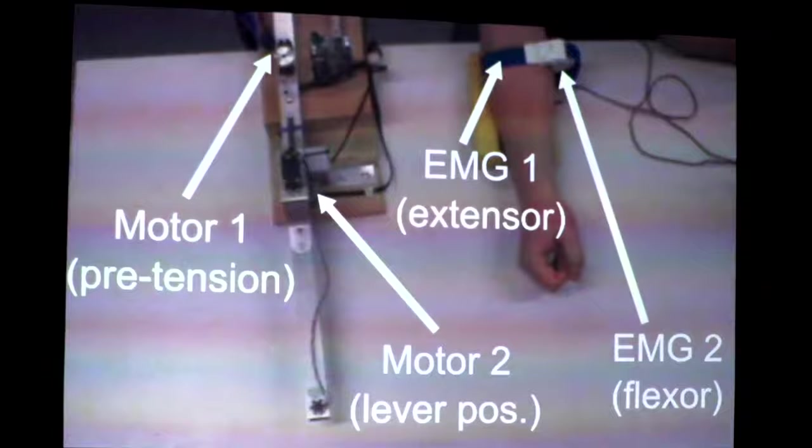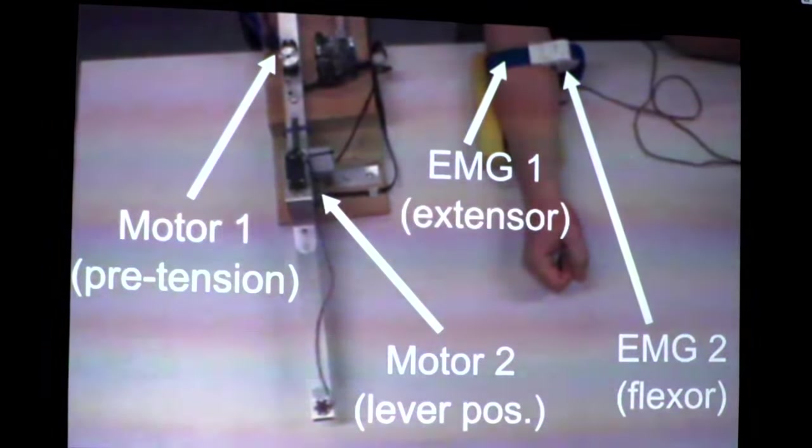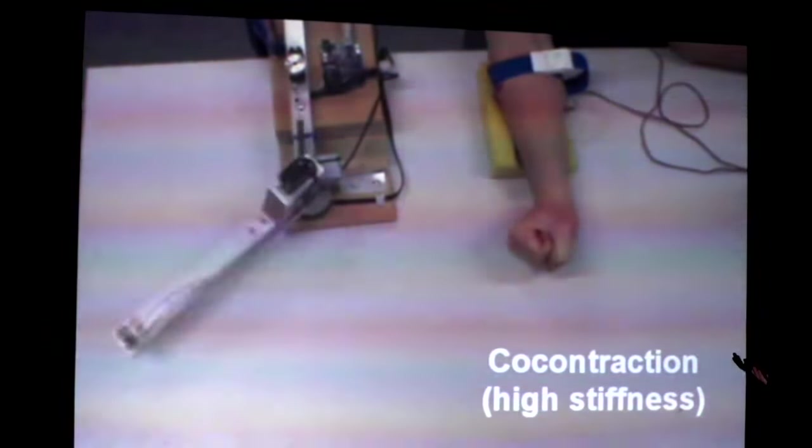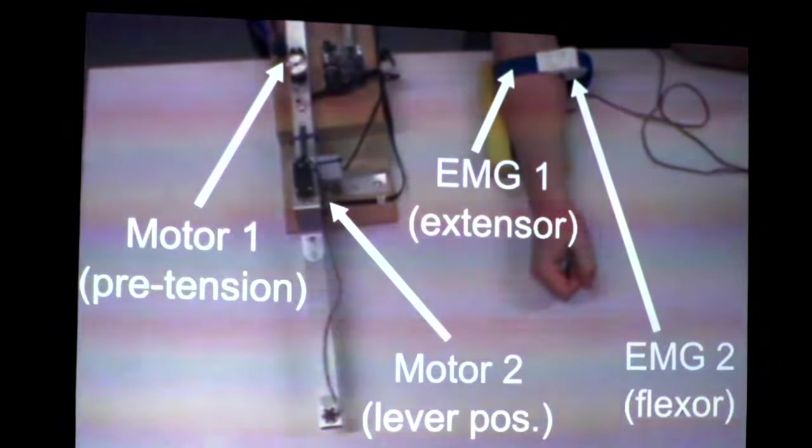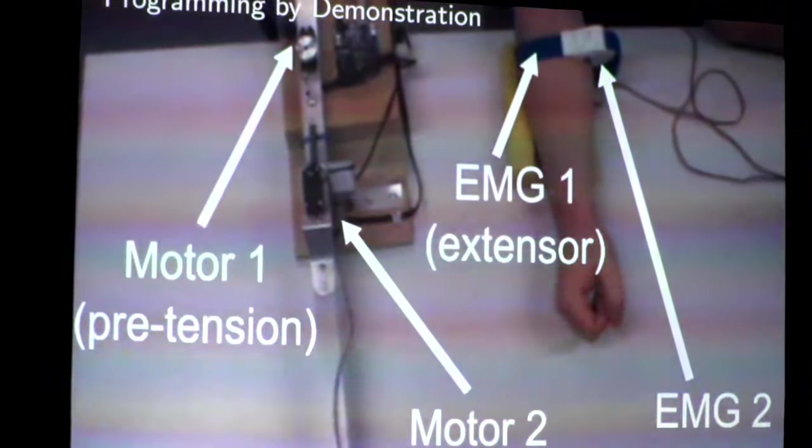So now we have, again, we've got the setup where we're measuring the EMG from the forearm there, from the antagonistic muscles. And in this case, we're defining the stiffness as the extent of co-contraction of the hand and the asymmetry as the equilibrium position. And we're feeding these back to the robot as references, so feature references, basically. So you can see we can do exactly as what we did with the biomorphic device. We can co-contract, we can increase the stiffness of the robot, we can move left and right. But now we can do it all with a much more compact system.